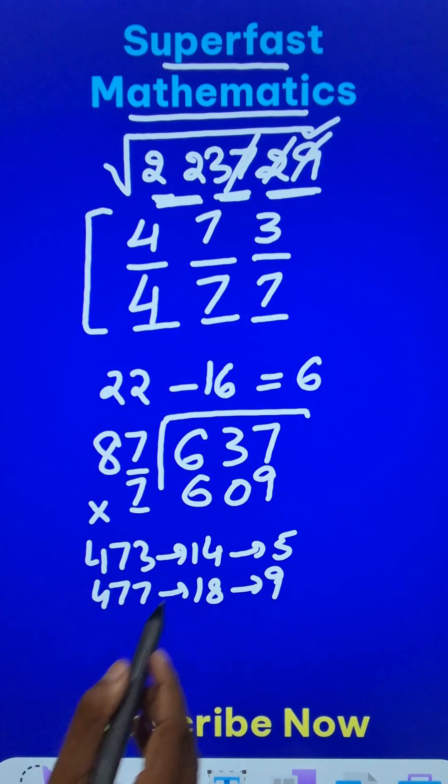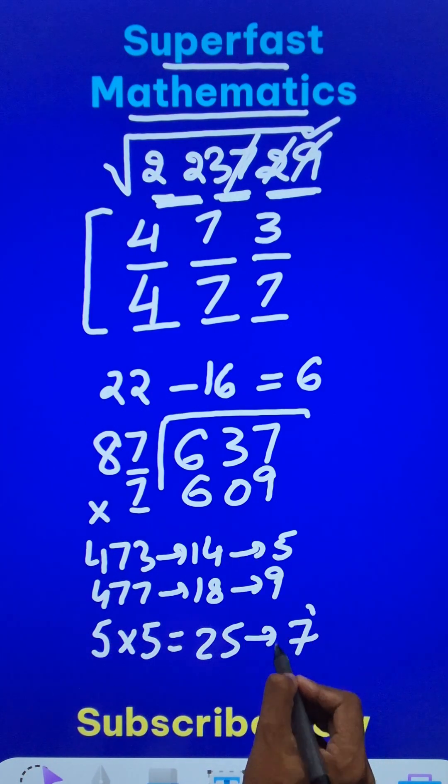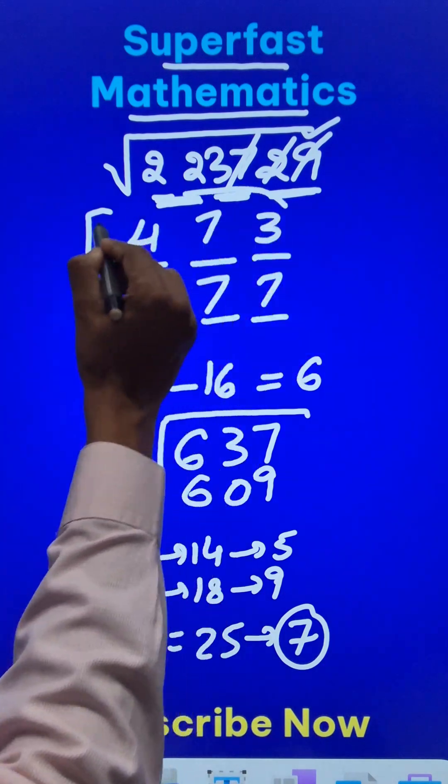Now 5 times 5 is 25, and 25 means 2 plus 5, which is 7, and therefore 473 is the required answer. Thank you.